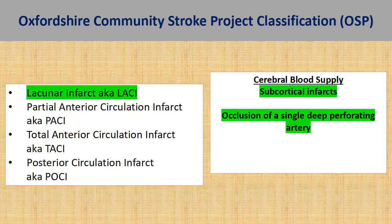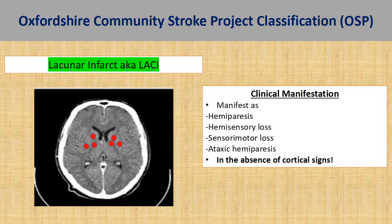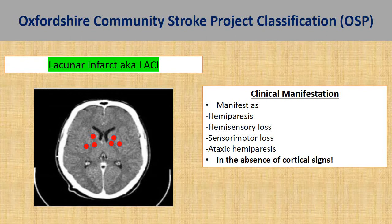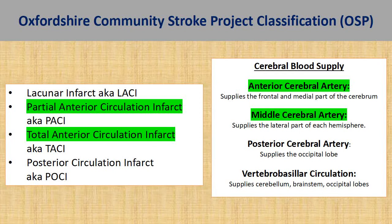Lacunar infarct arises from occlusion of a single deep perforating artery, as opposed to other stroke phenotypes which arise from occlusion of a large cerebral artery. The CT image illustrates the common site of lacunar infarct surrounding the basal ganglia area where the deep perforating arteries are located. The patient would present with pure hemiparesis, hemisensory loss, or a combination of sensorimotor loss, and rarely ataxic hemiparesis. Importantly, patients with lacunar infarct should not have cortical signs.